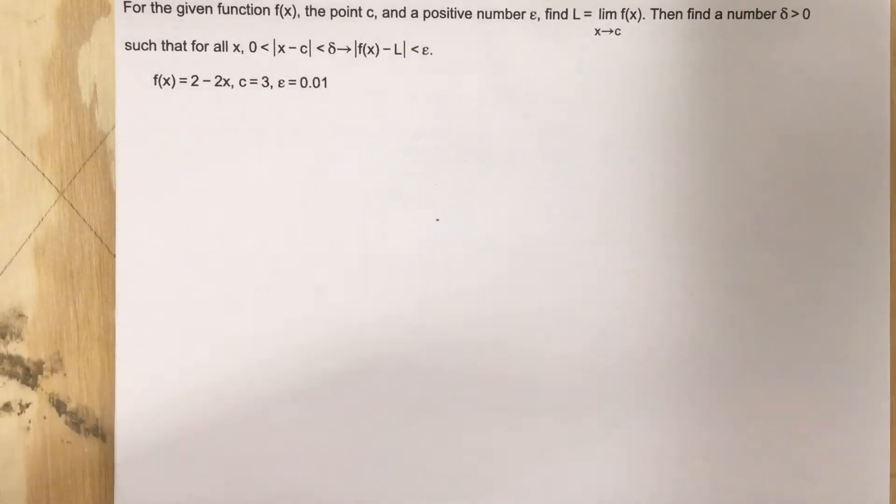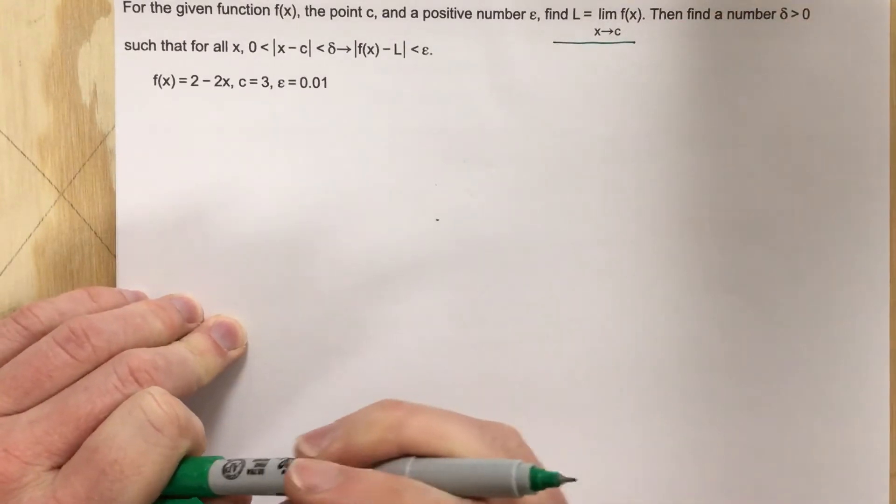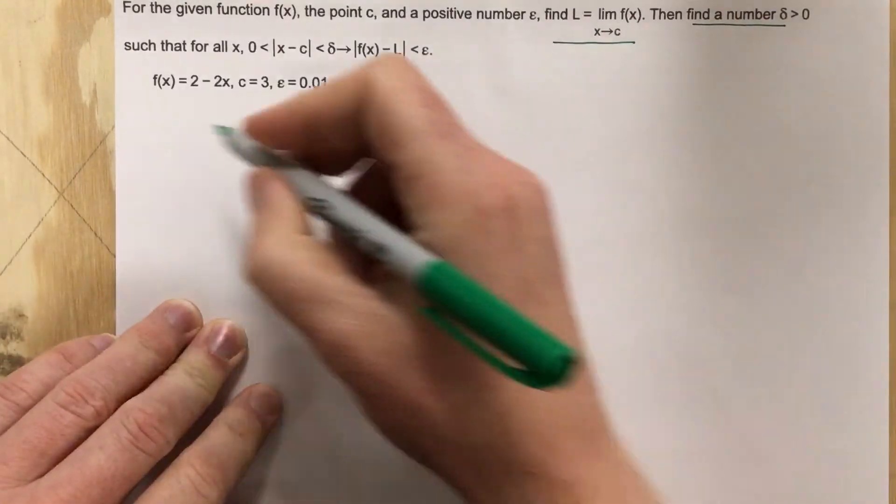Okay, so they tell us to find this first, and then they want us to find a delta second. So let's find the limit first.